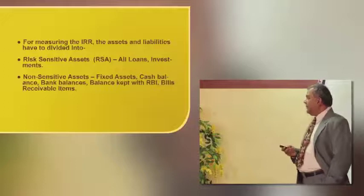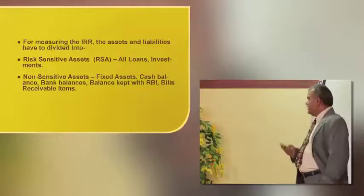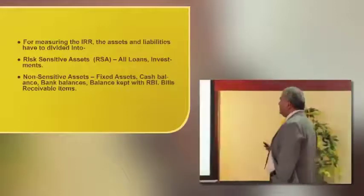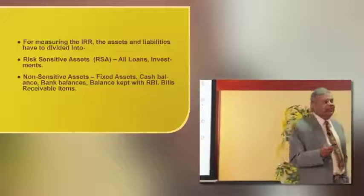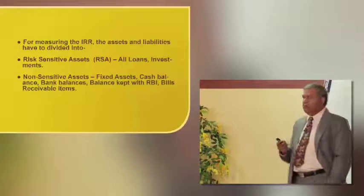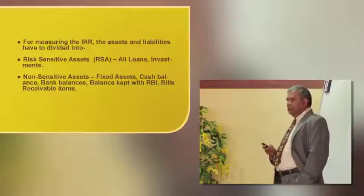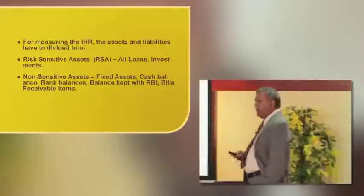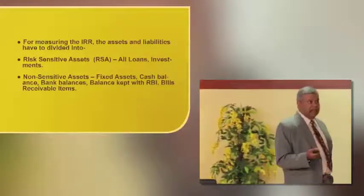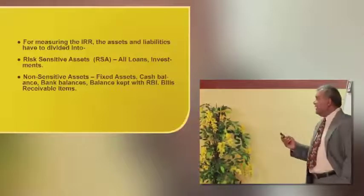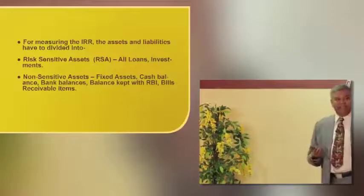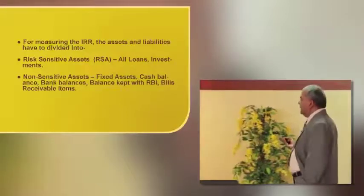Risk-sensitive assets (RSA) include all loans and investments where a coupon or interest rate is present. Non-sensitive assets include fixed assets such as buildings, premises, cash on hand, bank balances, and balances parked with RBI for CRR — since on the CRR portion the bank receives no interest. Such placements are called non-sensitive or dead assets, including NPAs on which no interest is received.